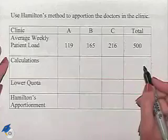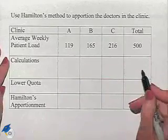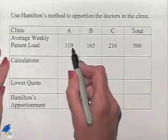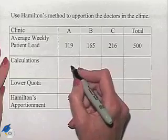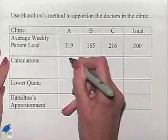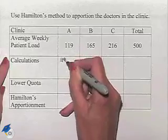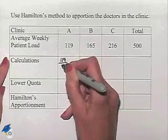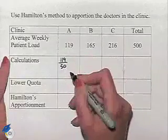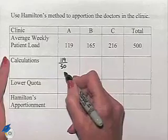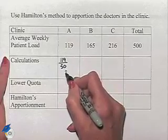In order to use Hamilton's method, we would find our standard divisor and take each of our populations and divide by that divisor. In other words, in our first clinic, we would have 119 divided by our standard divisor, which is 50. And that value is going to end up being 2.38.